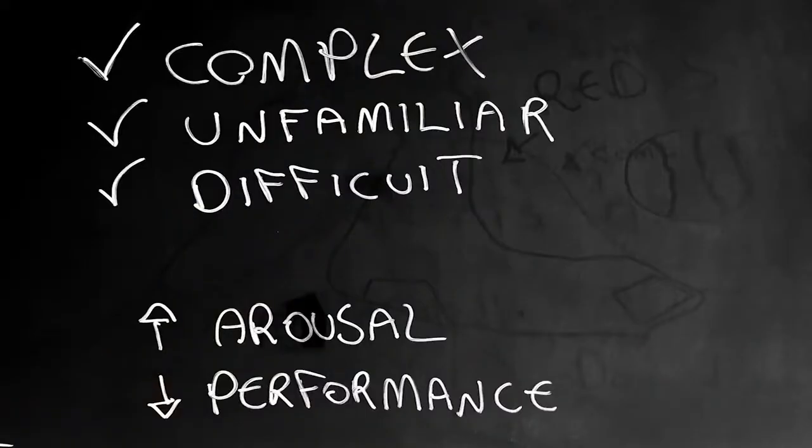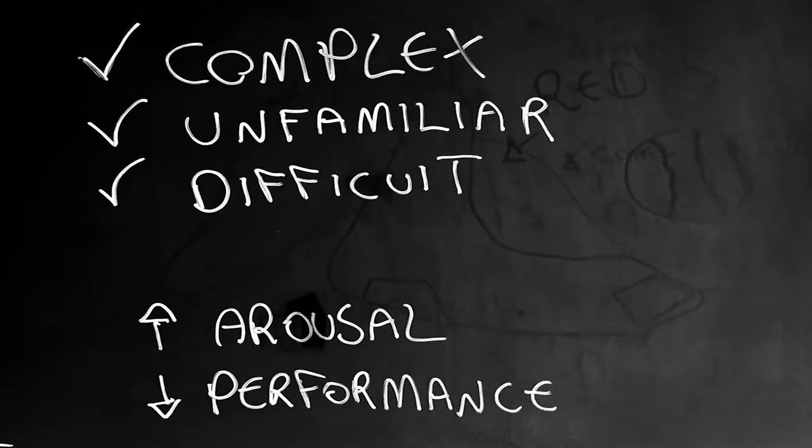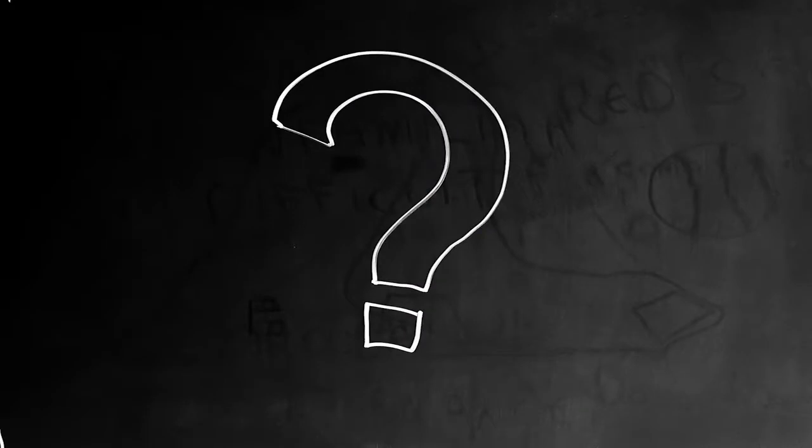Anxiety can become a problem. High levels of anxiety can become a problem with complex, unfamiliar, or difficult tasks. And this is what happens. When our level of arousal, like, maybe in 1913, when they created the law, the word arousal will likely have a different meaning than it does today. But it's essentially alertness, excitement. For complex, unfamiliar, and difficult tasks, as your excitement or anxiety arousal increases, your performance decreases.